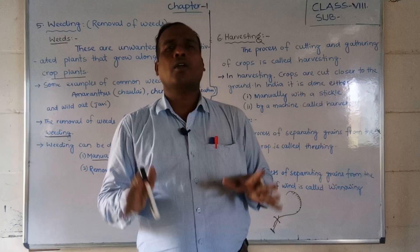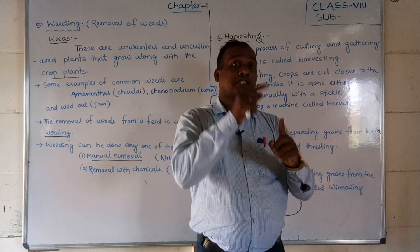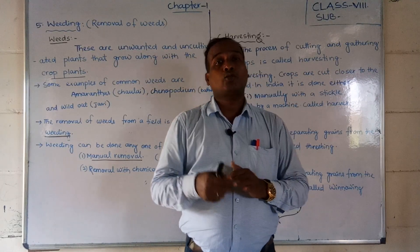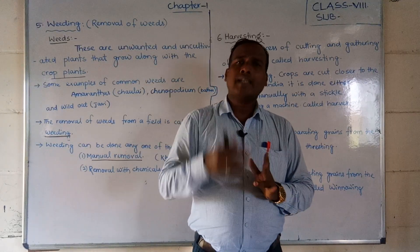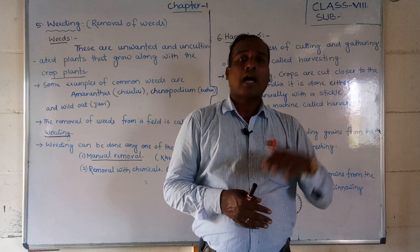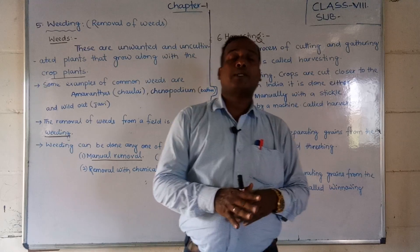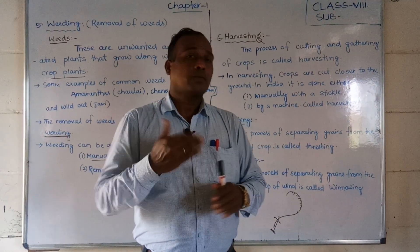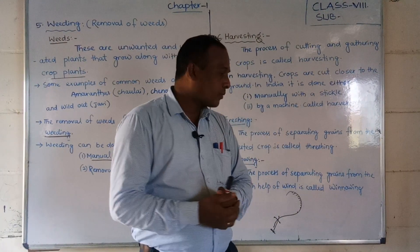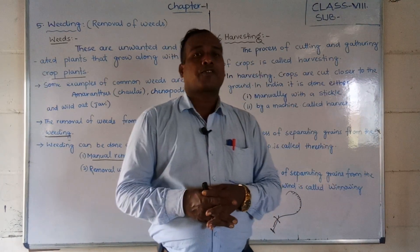These are all seven basic agricultural practices, which are very important to remember in sequence: first is preparation of soil, second is sowing of seeds, third is adding manure and fertilizers, fourth is irrigation, fifth is weeding, sixth is harvesting, and seventh is storage. All these basic practices are very important for farmers to get good crops. In the next video, we will discuss animal products and foods. Thank you.